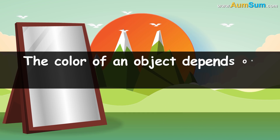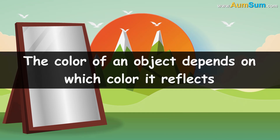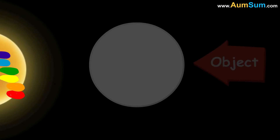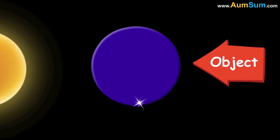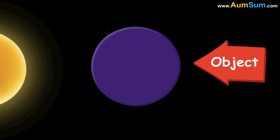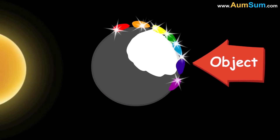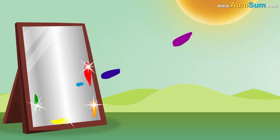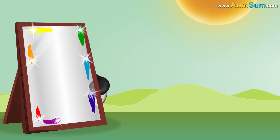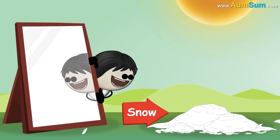The color of an object depends on which color it reflects. If an object reflects blue, it appears blue. If it reflects all colors, it appears white. Now, a mirror reflects almost all colors. So that means its color should be white, just like snow.